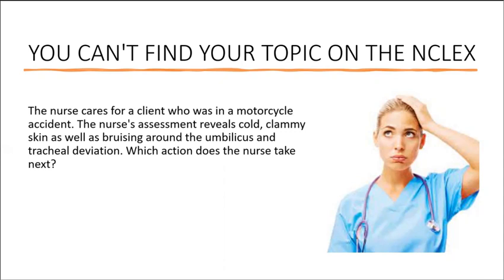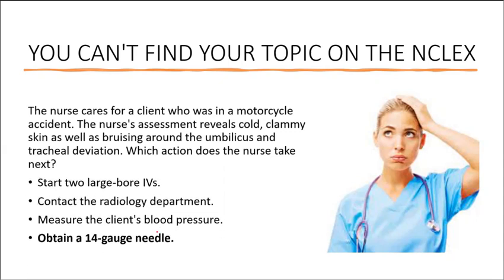Looking at this question, are you able to identify that the topic is about tension pneumothorax? Even before seeing the options, I'm already thinking of needle decompression as the action to take. Looking at the options, I can see 'obtain a 14-gauge needle' — I would need that to carry out needle decompression. That's how you want to approach the NCLEX. If you're not able to find your topic, that's a reason why you failed.